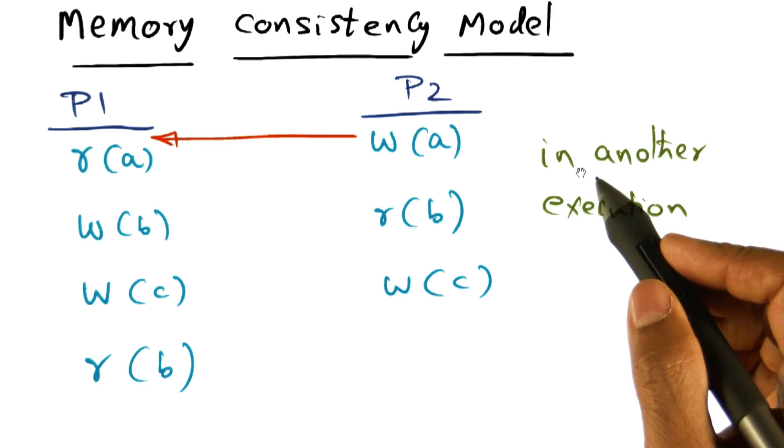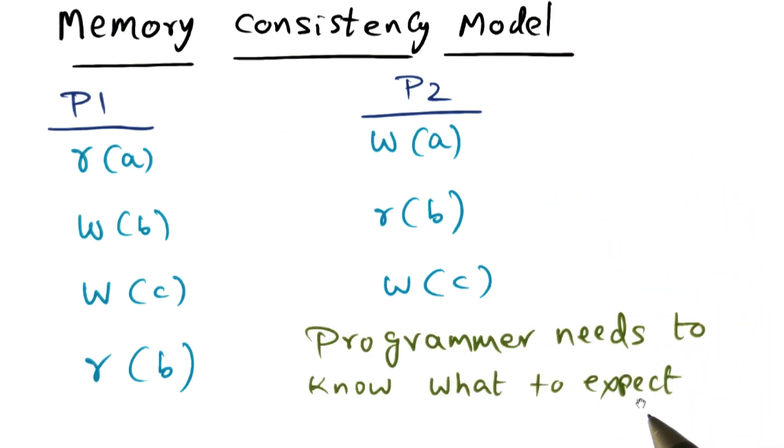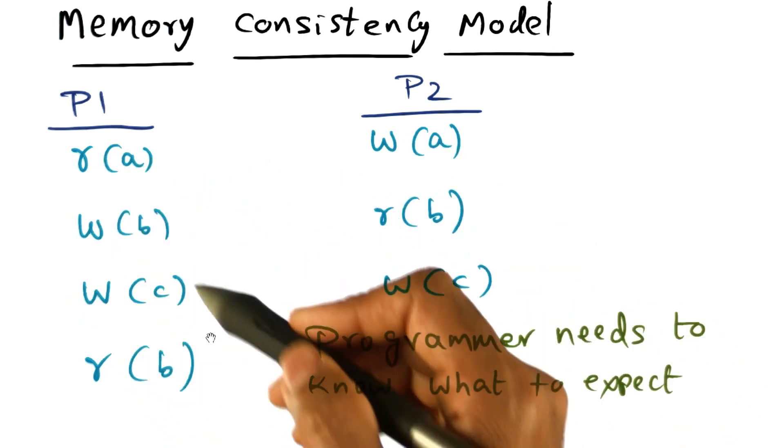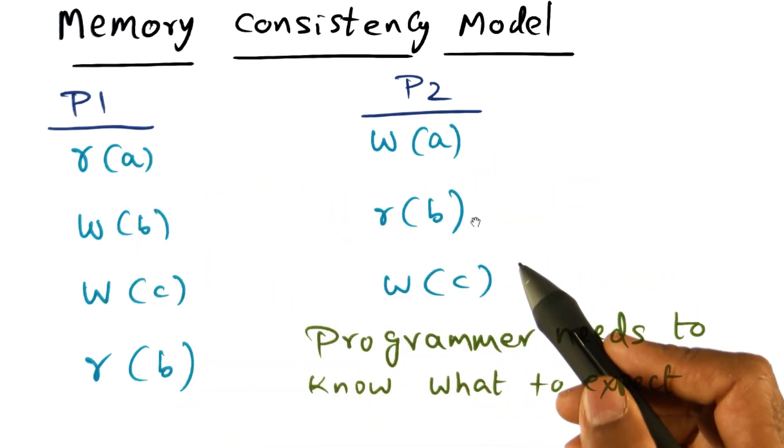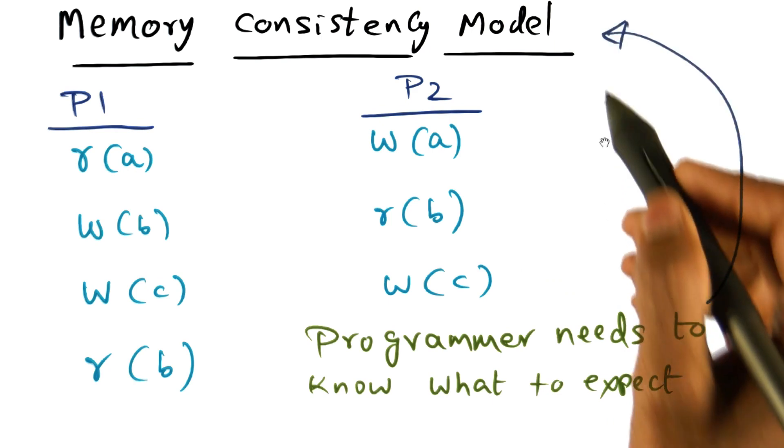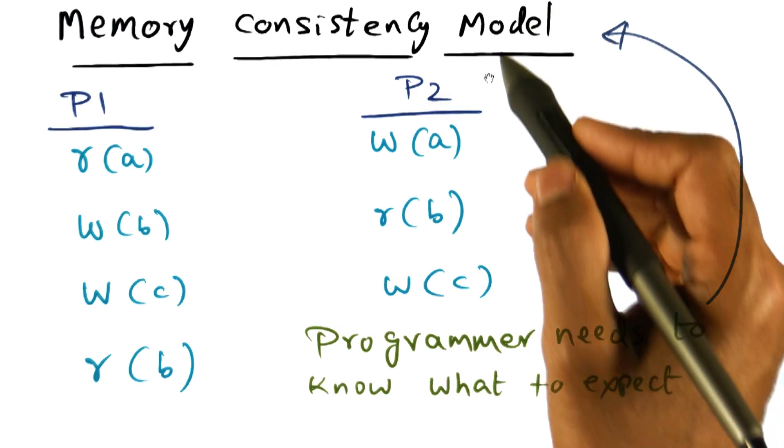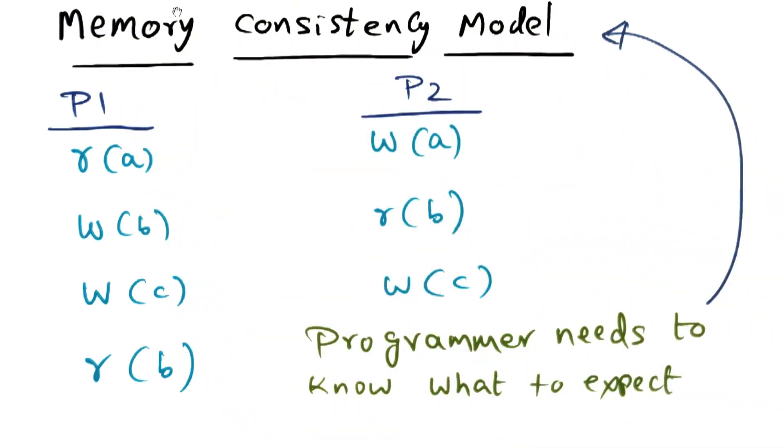Now in other words, what the programmer needs to know is what to expect from the system in terms of the behavior of shared memory reads and writes that can be emanating from several different processes. And this is what is called the memory consistency model. So the expectation of the programmer is what is ingrained in this memory consistency model.